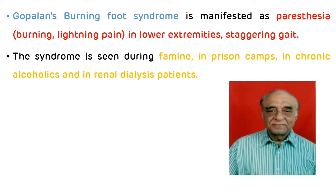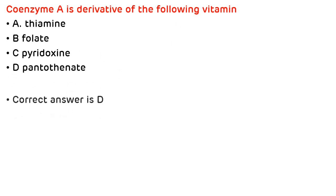First question is: coenzyme A is a derivative of the following vitamin, and the options are thiamine, folate, pyridoxin, and pantothenate. Answer is: coenzyme A is a derivative of vitamin B5, that is pantothenate. So correct answer is D.